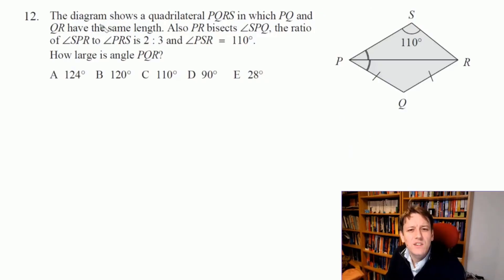There's a lot of information to take in in this question. It tells us that PR bisects angle SPQ, so that means that these two are the same. It also tells us that the ratio of angle SPR to angle PRS is 2 to 3, and that's the key piece of information we're going to use first here.